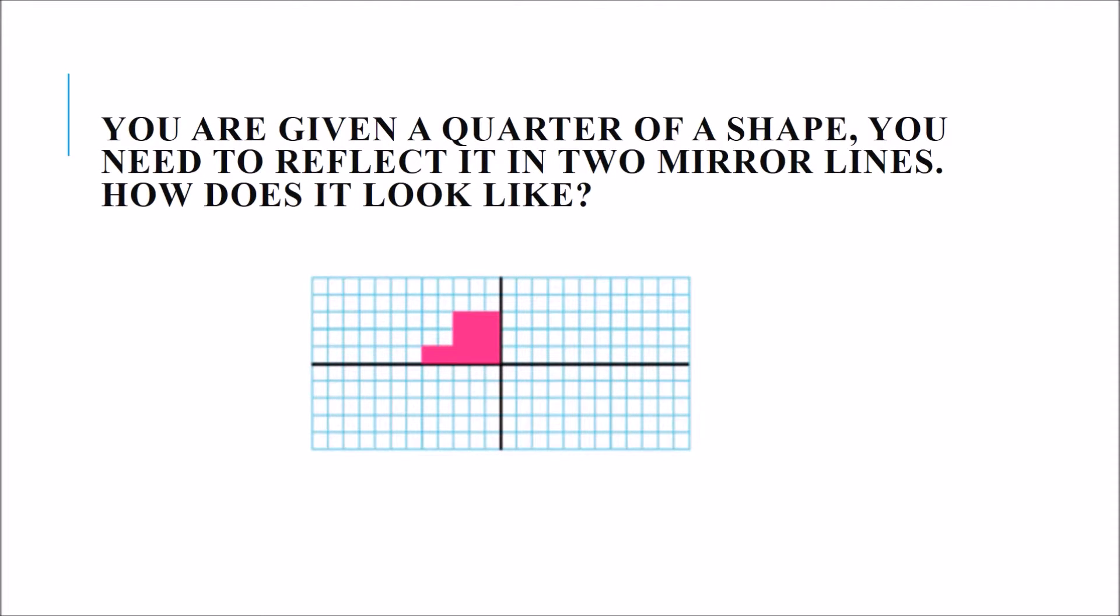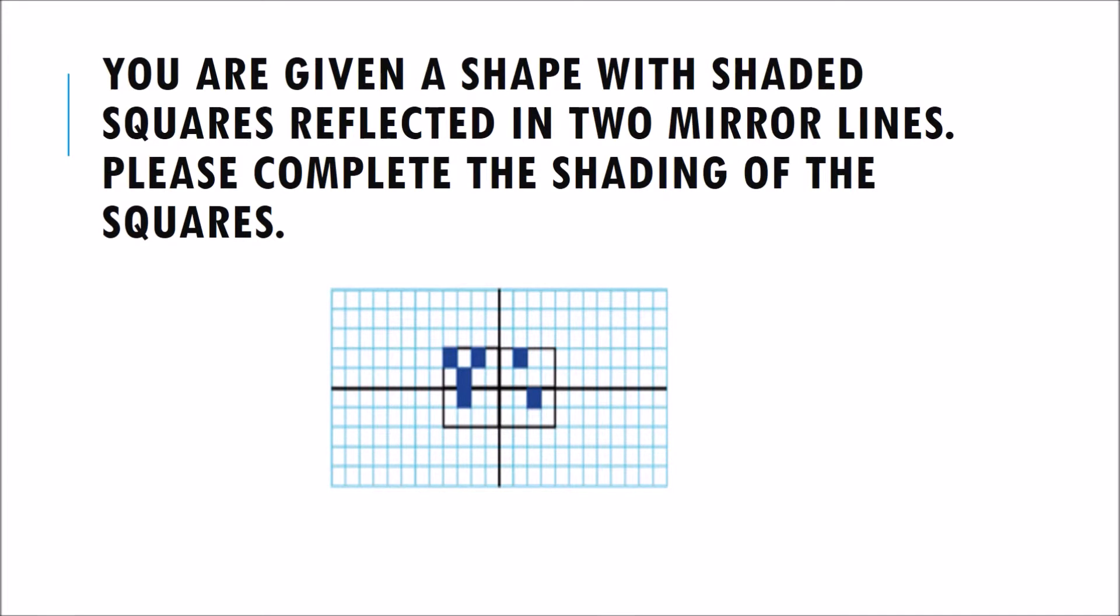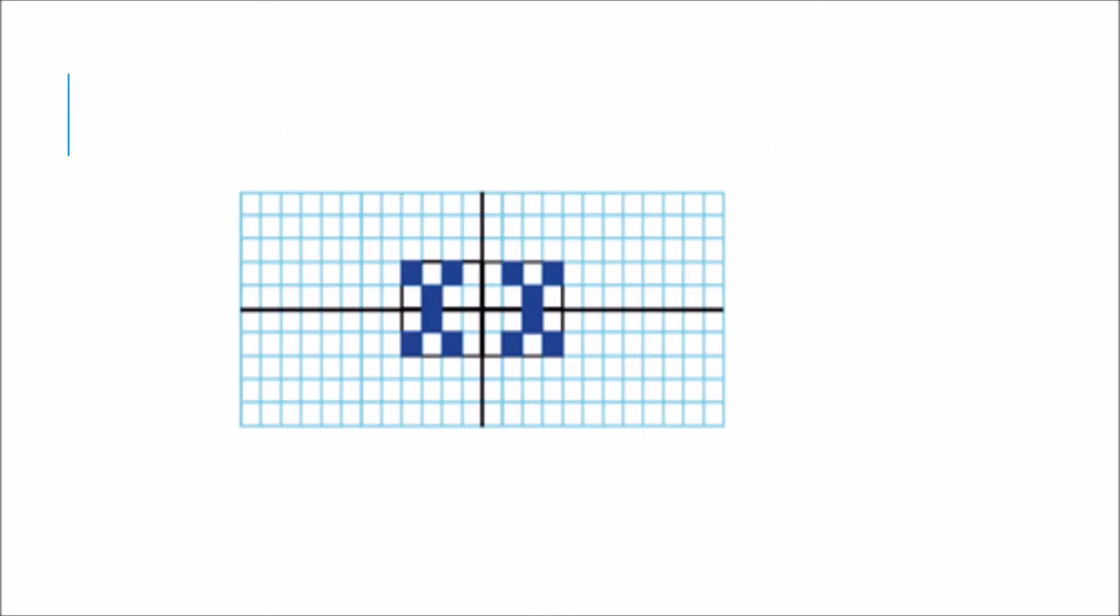Let us take a look at another type of symmetry. You are given a quarter of a shape. You need to reflect it in two mirror lines. How does it look like? And this is how it should look like. And now you are given a shape with shaded squares reflected in two mirror lines. Please complete the shading of the square. And this is how it should look like this.